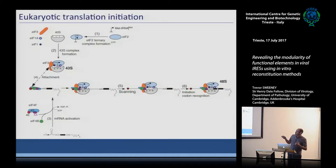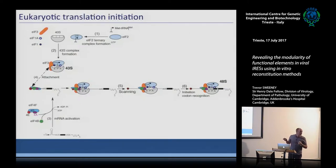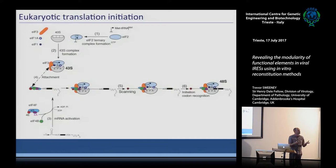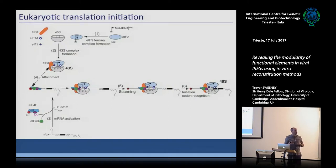We can detect this 48S complex using different systems, and by detecting it we can see what protein factors are needed for translation on particular RNAs. Since this is a virology talk, it's important to realize this is the background that viruses need to translate their genomes in. Viruses don't bring any translation factors — they need to use all the translation factors in the cells they infect to produce viral proteins for replication.